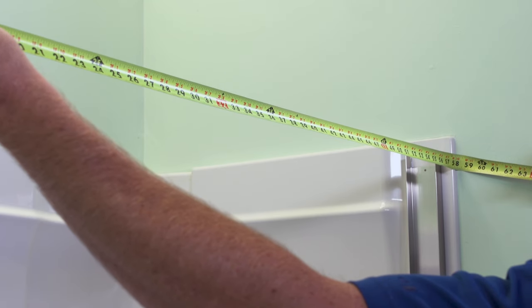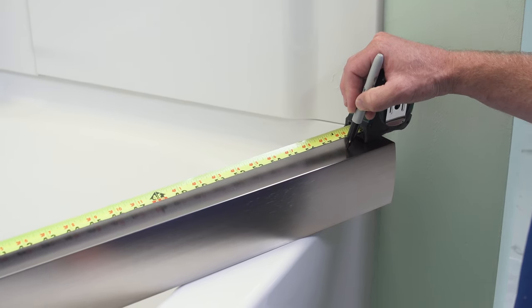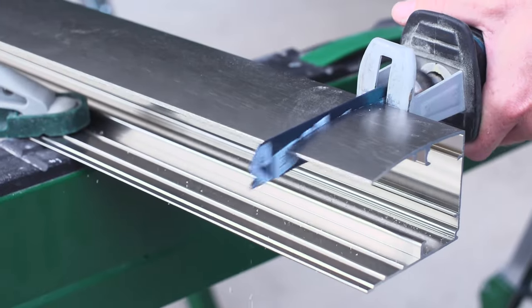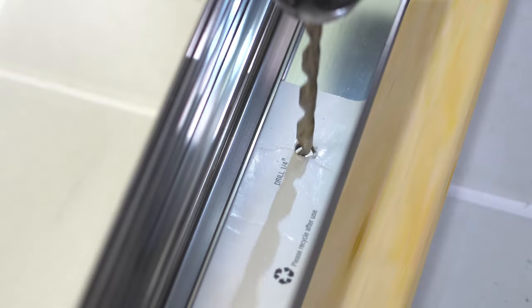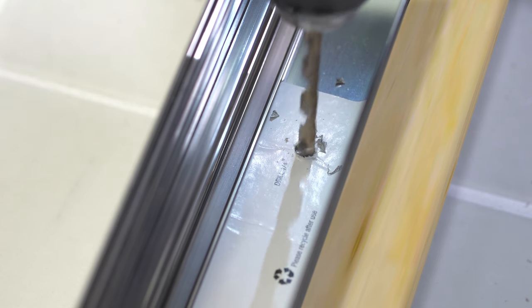Measure the distance from wall to wall on top of the alcove and subtract 1/16 of an inch. Cut the header based on this measurement. Place the drilling jig on the header and drill holes where indicated.